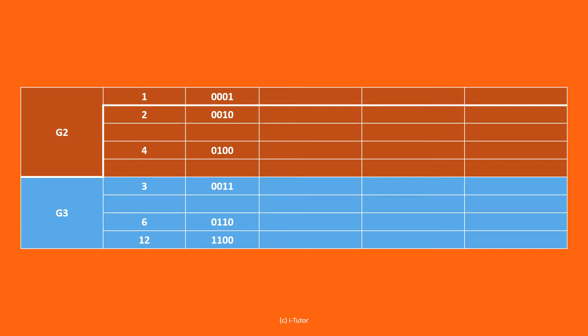Now let's repeat the same process for G2 and G3. Comparing 1 with 3 we get 00 underscore 1. One can't be grouped with 6 and 12 as there are more than one positional difference. Similarly on comparison of 2,3 we get 001 underscore, 2,6 we get 0 underscore 10. Two can't be grouped with 12 as two positions differ.